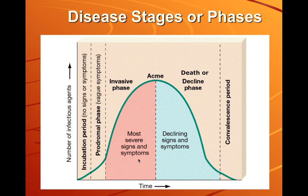The other possibility, once we've reached the peak of the symptomatic phase, is that there is no resolution to the condition and instead the patient dies. The stages or phases of infectious disease are consistent whether we're talking about a highly virulent pathogen like the Ebola virus or something as common as the cold.